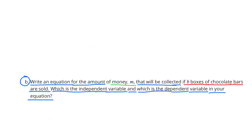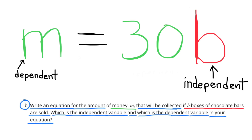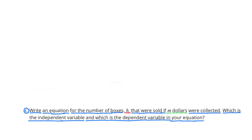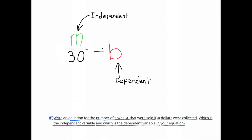B. Write an equation for the amount of money M collected if B boxes of chocolate bars are sold. M equals $30 per box times the number of boxes sold, so M equals 30B. The dependent variable is M, the amount of money collected, and the independent variable is B, the number of boxes sold. C. Write an equation for the number of boxes B sold if M dollars were collected. The amount of money collected divided by $30 per box equals the number of boxes sold, so M over 30 equals B. The dependent variable is B and the independent variable is M.